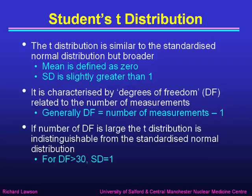If the number of degrees of freedom is large — that is, the number of measurements is large — the t-distribution is indistinguishable from the standardized normal distribution. So for degrees of freedom more than about 30, the standard deviation is very close to one.